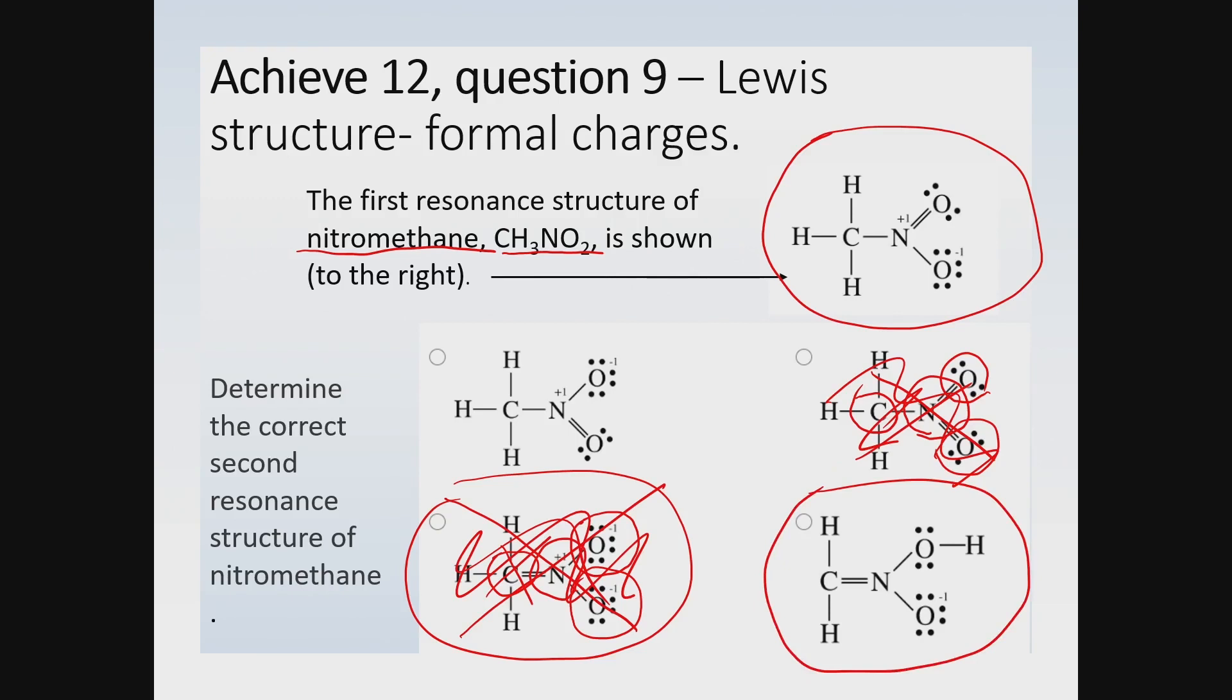There's another rule about resonance structures: you only have a correct resonance form of the first structure you're considering if the atoms are connected in basically the same way. So let me explain that. Here is our first structure, and we're trying to find a good resonance form for it. I want you to notice how the atoms are connected together.